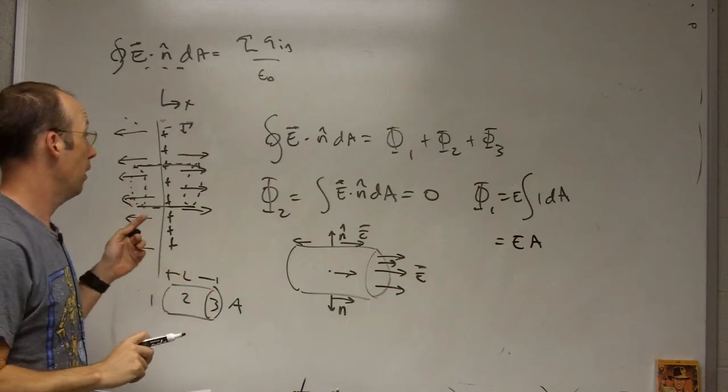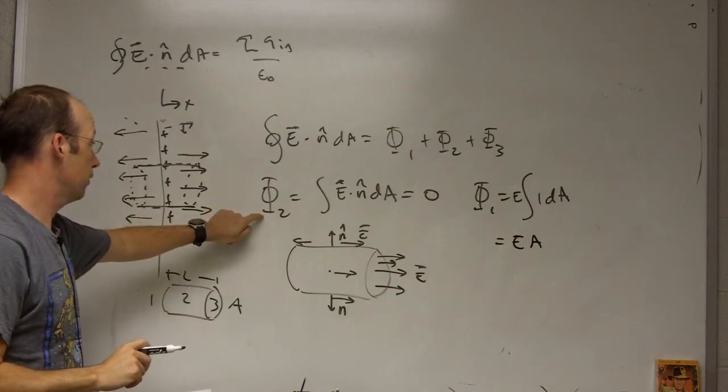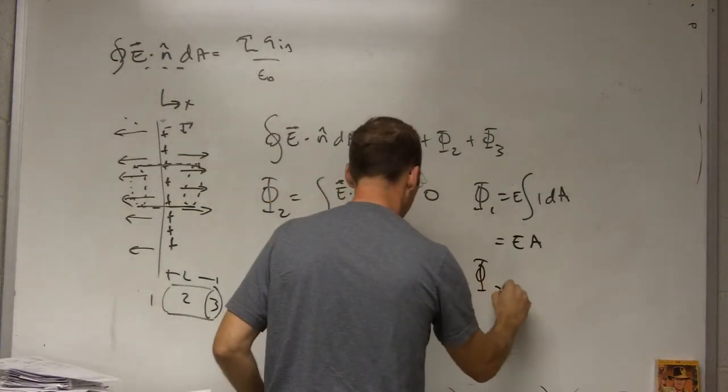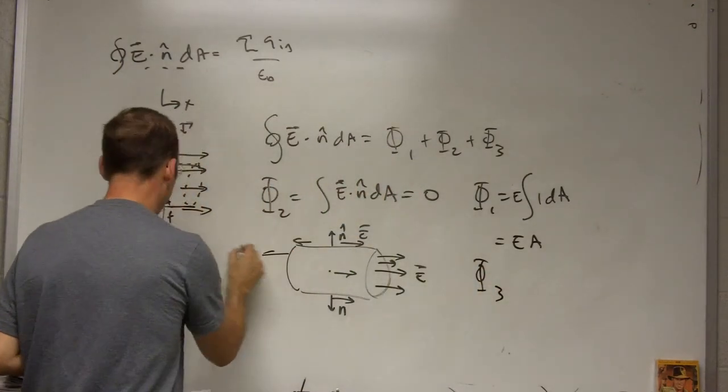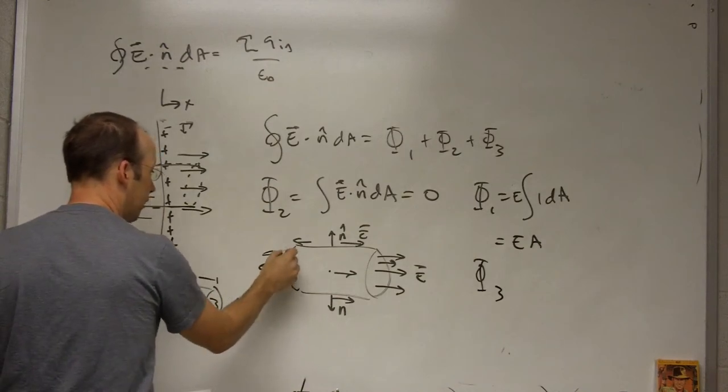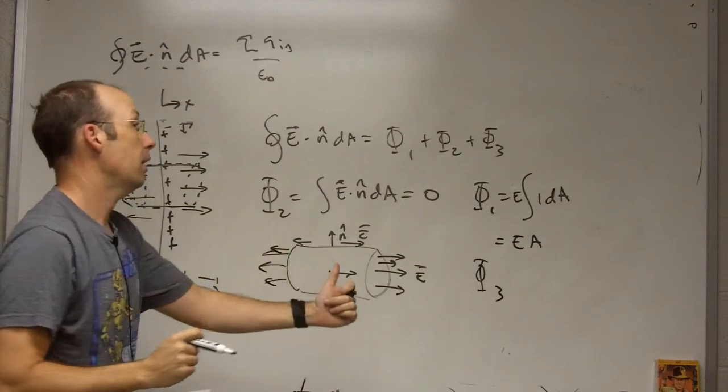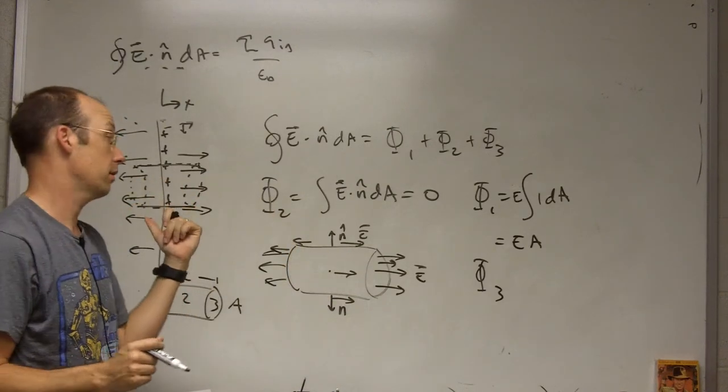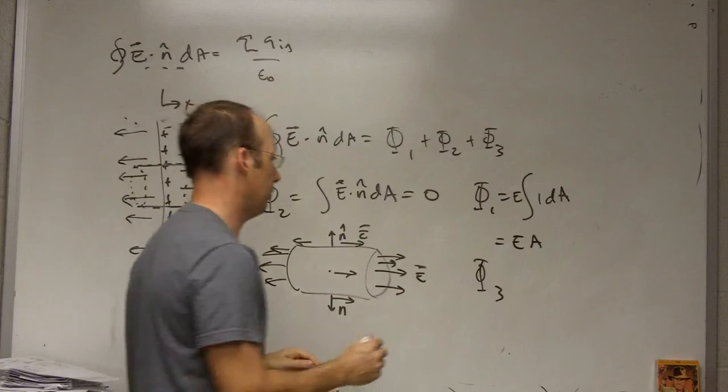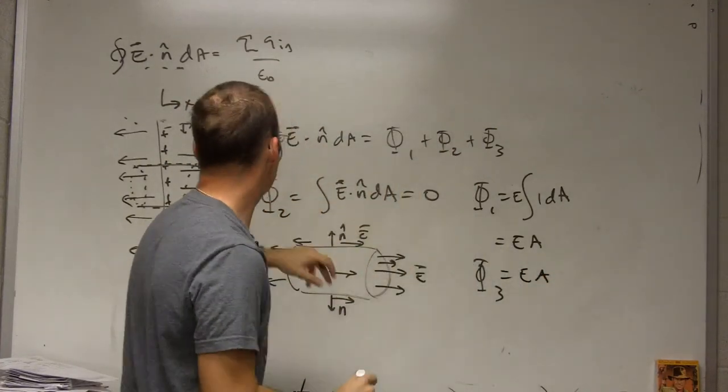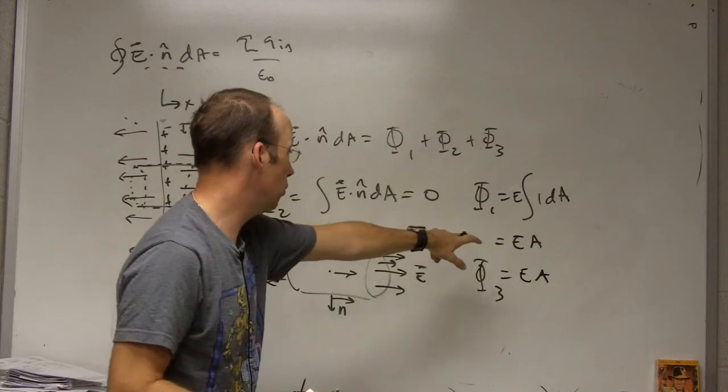Now I need to do phi 3. What's different about phi 3 is now, if I'm on that side of the plate, the electric field is going this way, but so is n hat. So E is in the negative x direction, n hat is in the negative x direction. So I still get the exact same thing. So now if I put all this together, the total flux is going to be 2 E A.